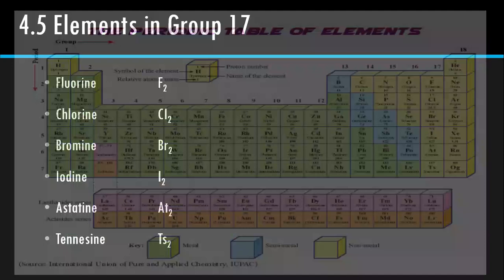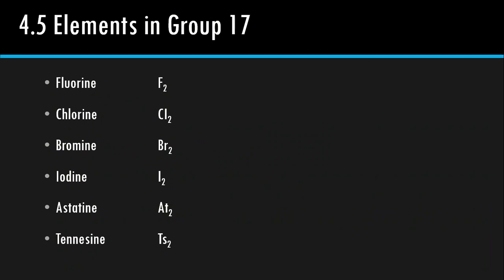So they are fluorine, chemical formula F2; chlorine, Cl2; bromine, Br2; iodine, I2; astatine, At2; then tennessine, Ts2. As usual, you have to memorize the formula for each of the element.